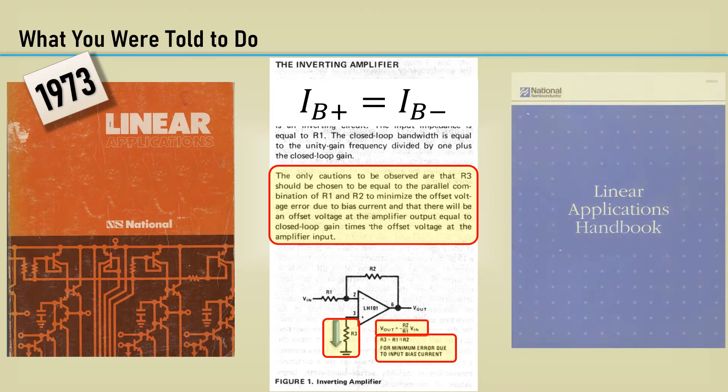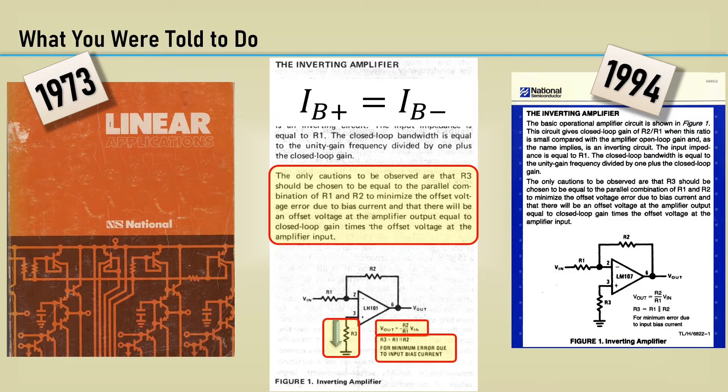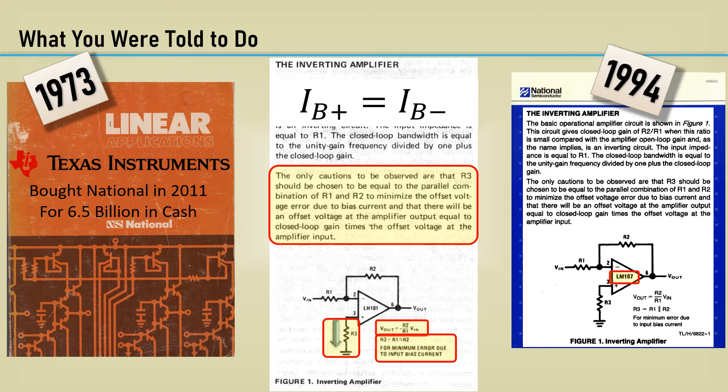That exact same information is repeated again in this 1994 linear applications handbook. Same schematic image with the big dots, but similar typography. One difference is the use of an LM107 instead of an LM101. In case you didn't know, Texas Instruments bought National Semiconductor in 2011 for $6.5 billion in cash.